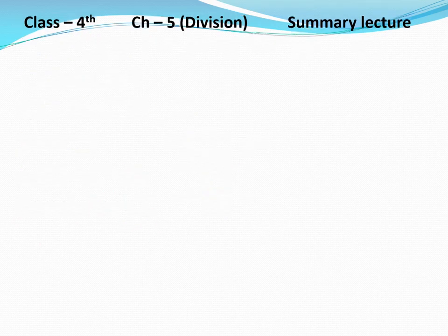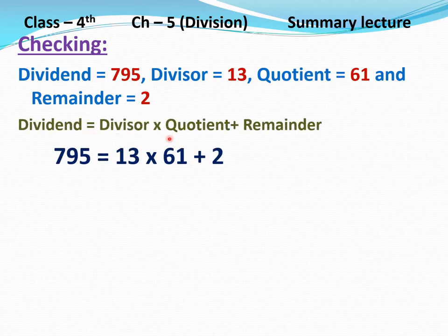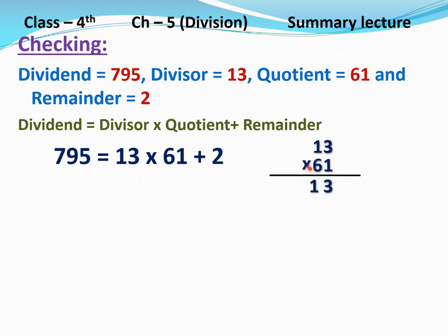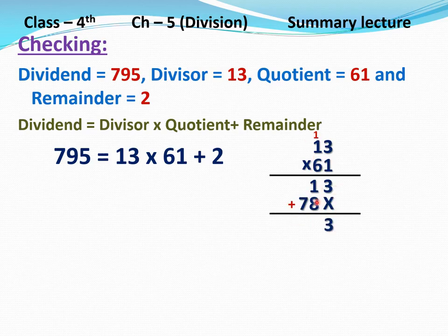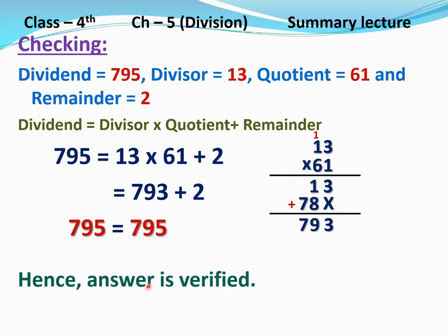Now we will check our answer. Dividend equals 795, divisor equals 13, quotient equals 61, remainder equals 2. Dividend equals divisor multiplied by quotient plus remainder. 795 equals 13 multiplied by 61 plus 2. Multiply 13 by 61: 1 times 3 is 3, 1 times 1 is 1. Then multiply 13 by 6: 6 threes are 18, write 8 and carry 1; 6 ones are 6 plus 1 is 7, write 7. Addition: write 3, 1 plus 8 is 9, write 9, and write 7. 13 multiplied by 61 equals 793. 793 plus 2 equals 795. Left-hand side and right-hand side are both equal, hence answer is verified. Clear?